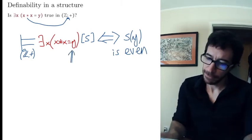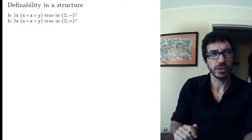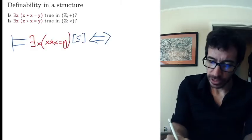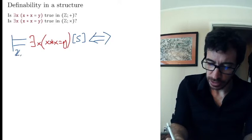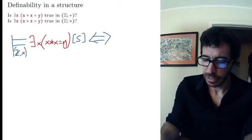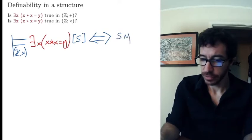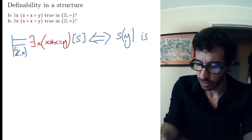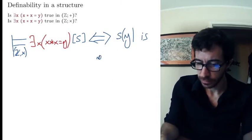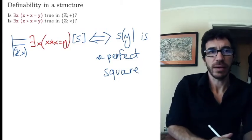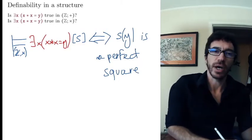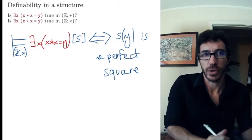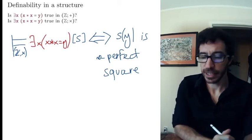What about the same formula but now star is interpreted as times? The formula is true in the integers with times if and only if s(y) is a perfect square — meaning a square of some integer. So for y equals 4, 9, 16, 25, you can find such an x, but only for those values.